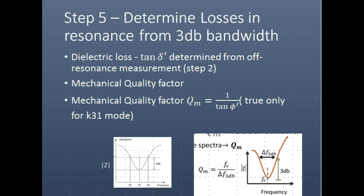Another way to determine losses from an impedance response is using the 3 dB bandwidth. As mentioned earlier, the tangent delta is determined from the off-resonance measurement. However, the quality factor — the mechanical quality factor — is the factor relating to the mechanical losses occurring in the material. So it is determined through a resonance measurement, using either the resonance or anti-resonance measurement.